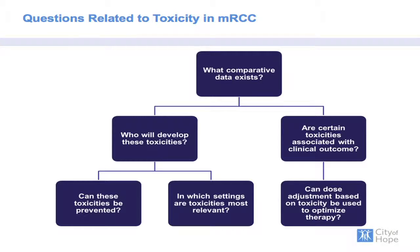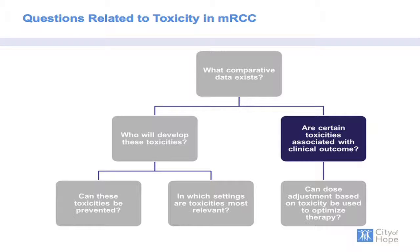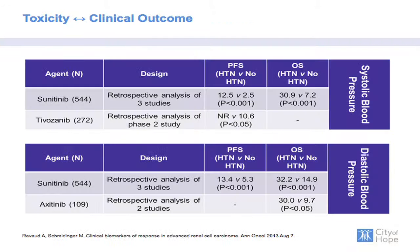Are certain toxicities associated with clinical outcome? There's outstanding data relating systolic and diastolic hypertension to outcome in patients receiving VEGF TKI therapy. Two studies looking at sunitinib and tivozanib associated systolic hypertension with benefit in progression-free and overall survival. Similarly, studies of sunitinib and axitinib identified a benefit in PFS and OS among individuals who develop diastolic hypertension.